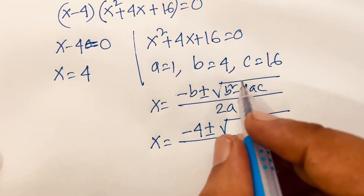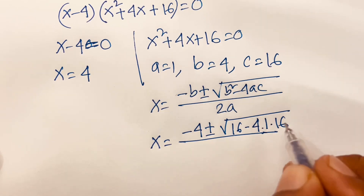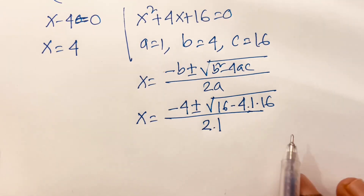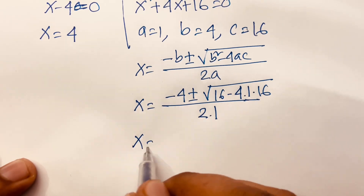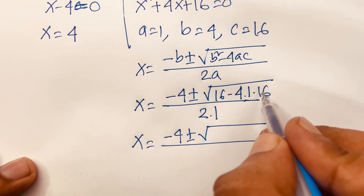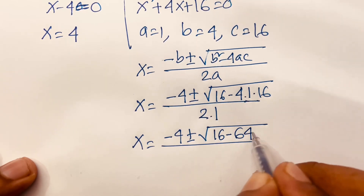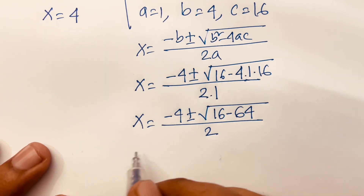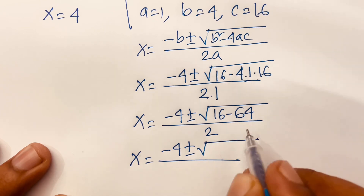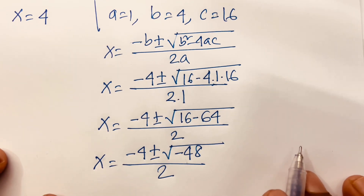Substituting the values: x equals minus 4 plus or minus square root of 4 squared minus 4 times 1 times 16, over 2 times 1. That gives x equals minus 4 plus or minus square root of 16 minus 64, over 2. So x equals minus 4 plus or minus square root of minus 48, over 2.